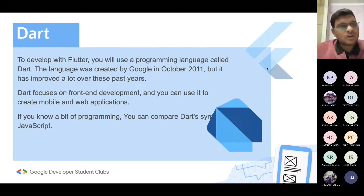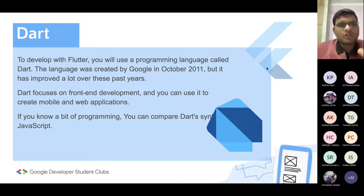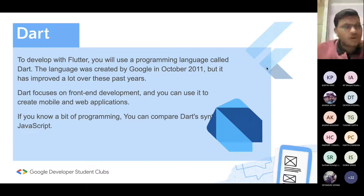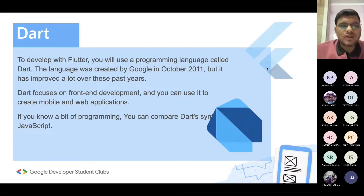For developing Flutter code, we use Dart as a language. Dart is also developed by Google, in October 2011, and has improved a lot over the past years. Dart mainly focuses on front-end development — you can use it for mobile app development and web applications. If you know a little programming, you will find its syntax somewhat similar to JavaScript.